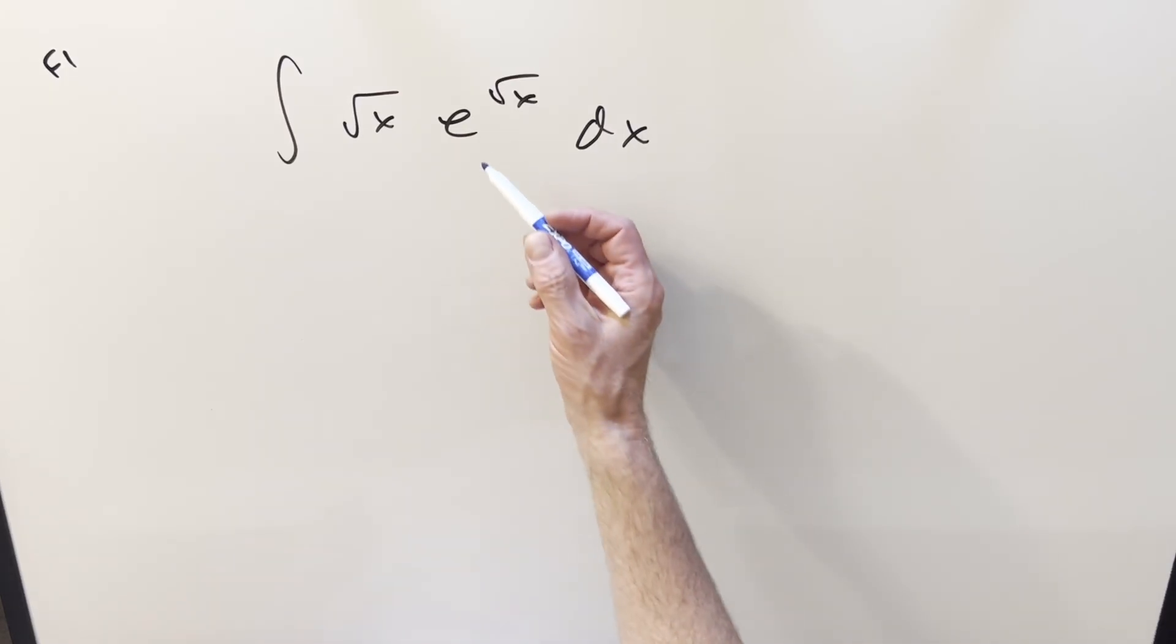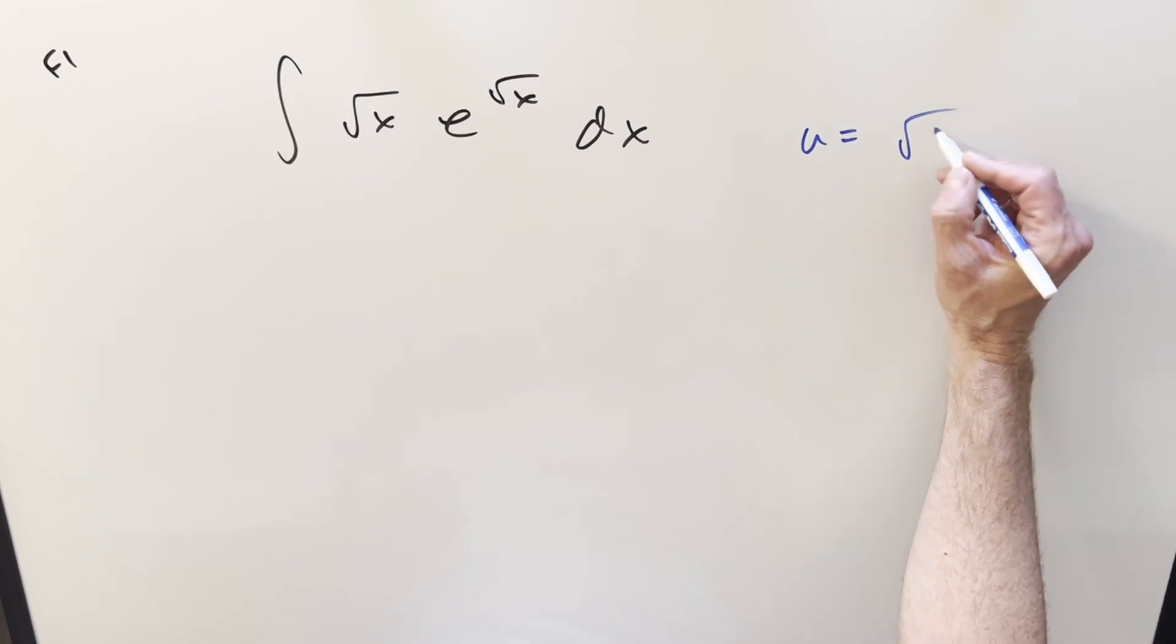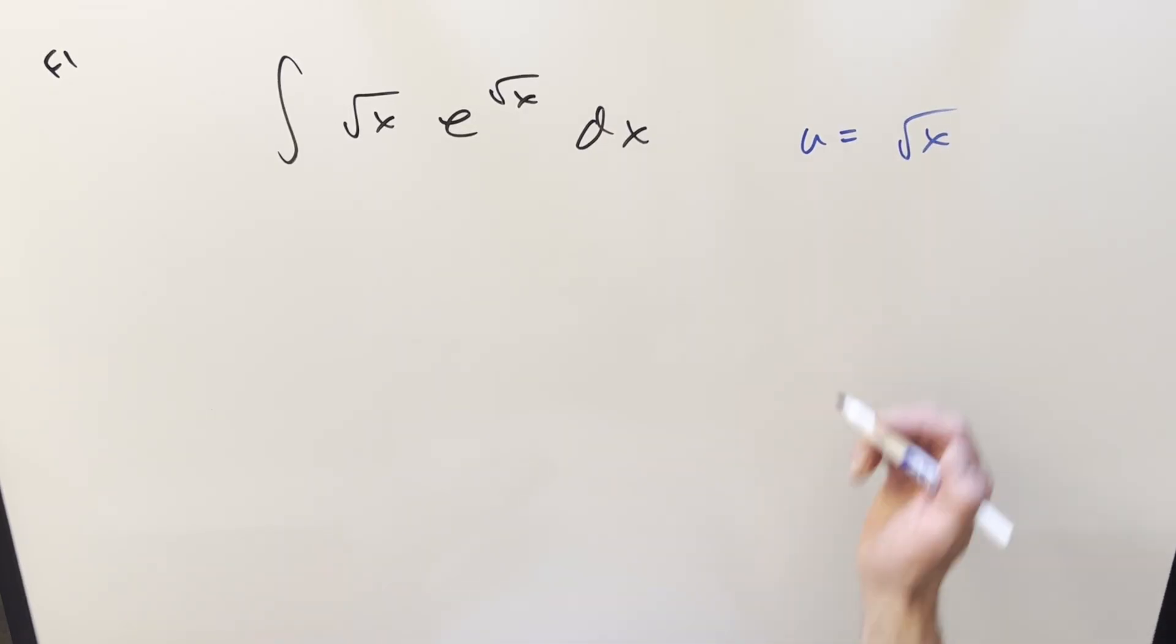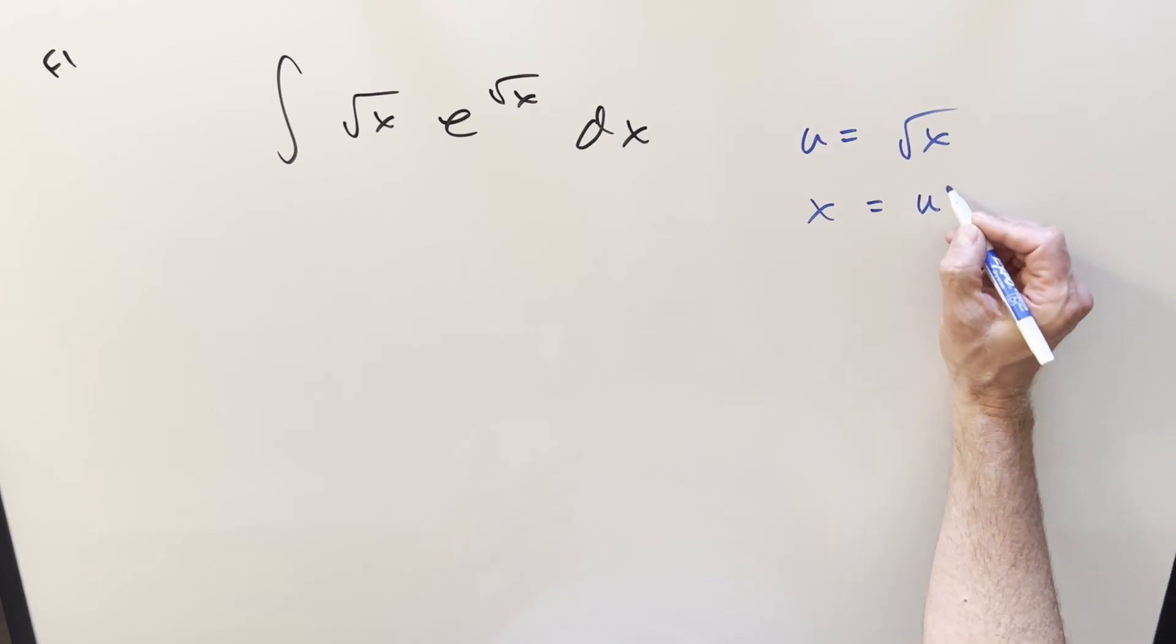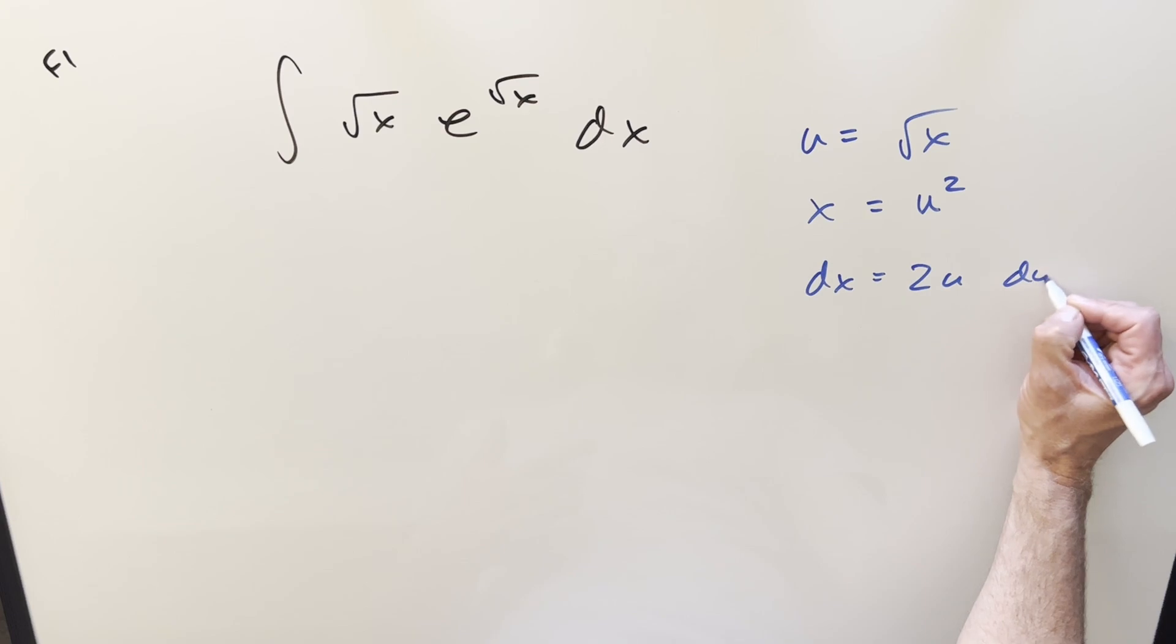This is really what we need, and the only trouble is having a square root here. So I can clean that up with a u sub. We'll take u equal to square root of x. Let's solve for x, squared both sides. We get x equal to u squared, and then take a derivative. dx is going to be 2u du.